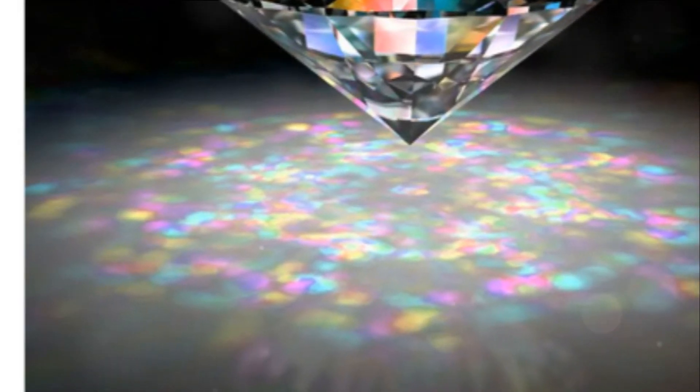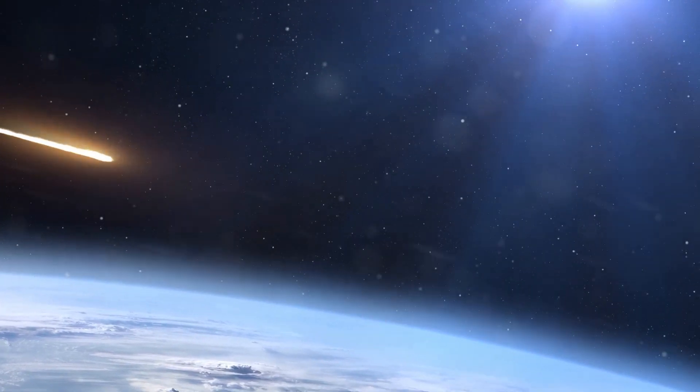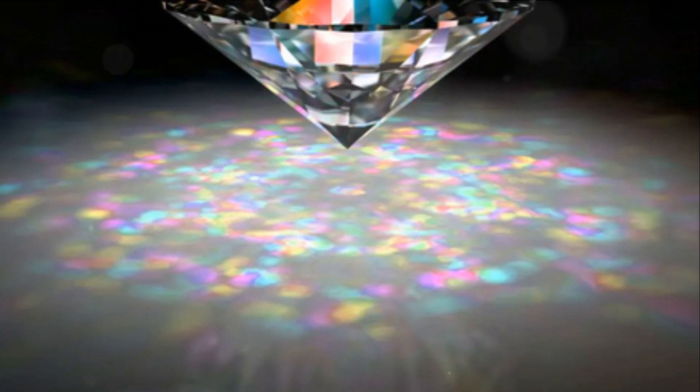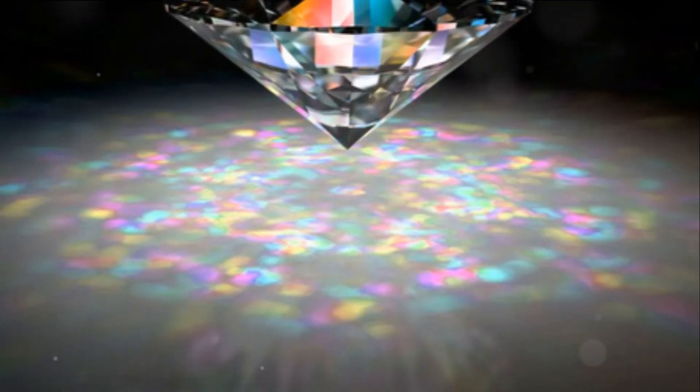Picture this: as meteorites penetrate the Earth's atmosphere, they heat up due to air friction, causing their outer layers to burn. However, the inner core remains relatively cool.